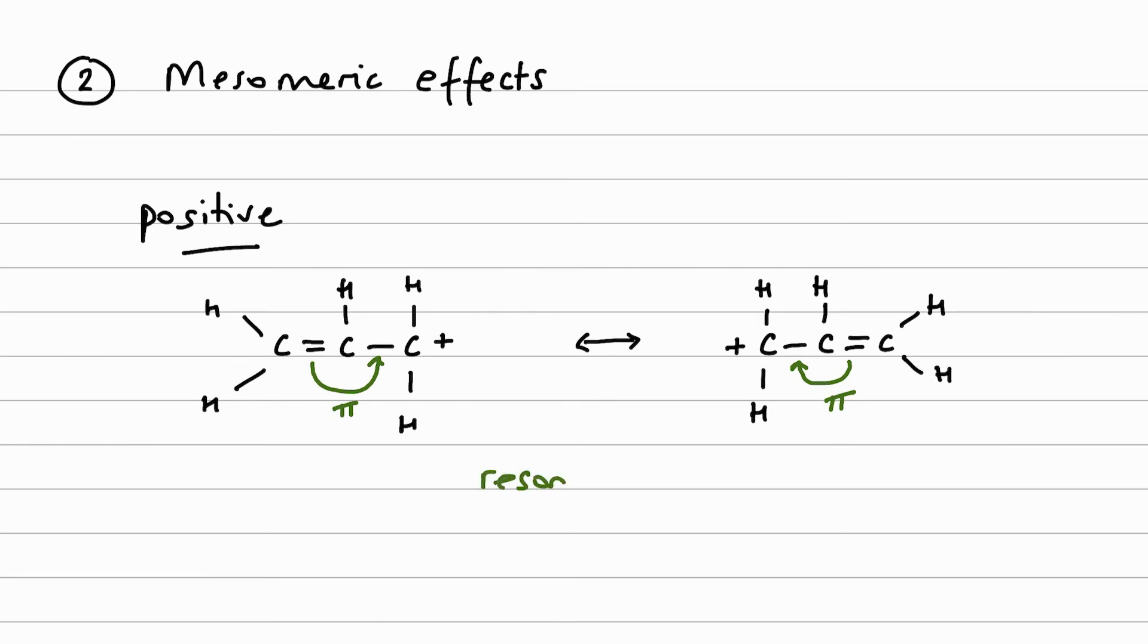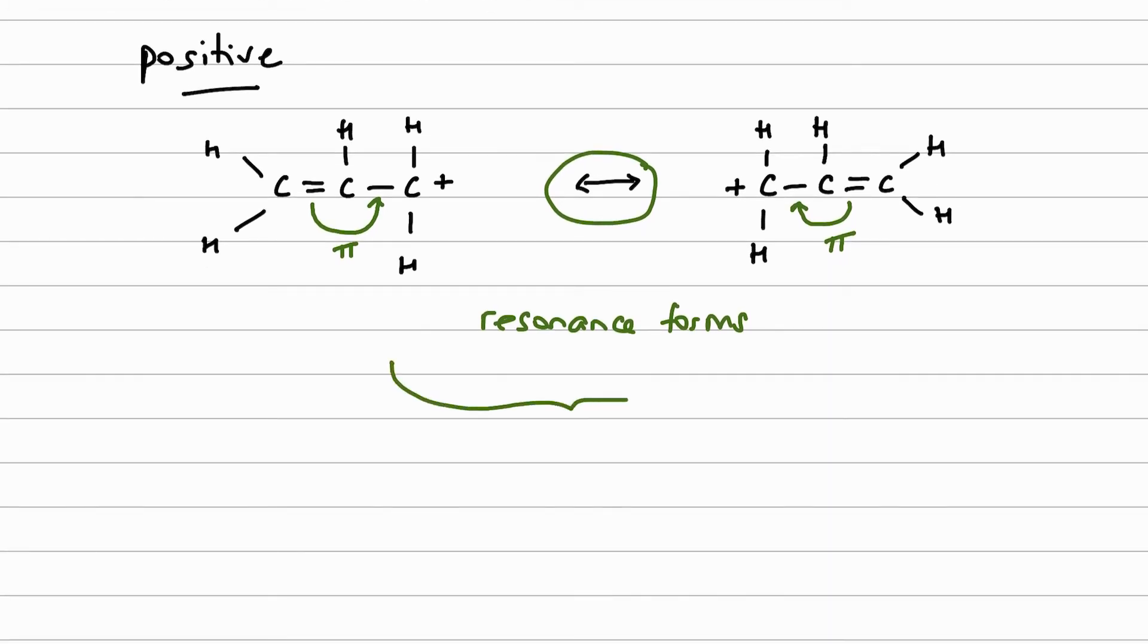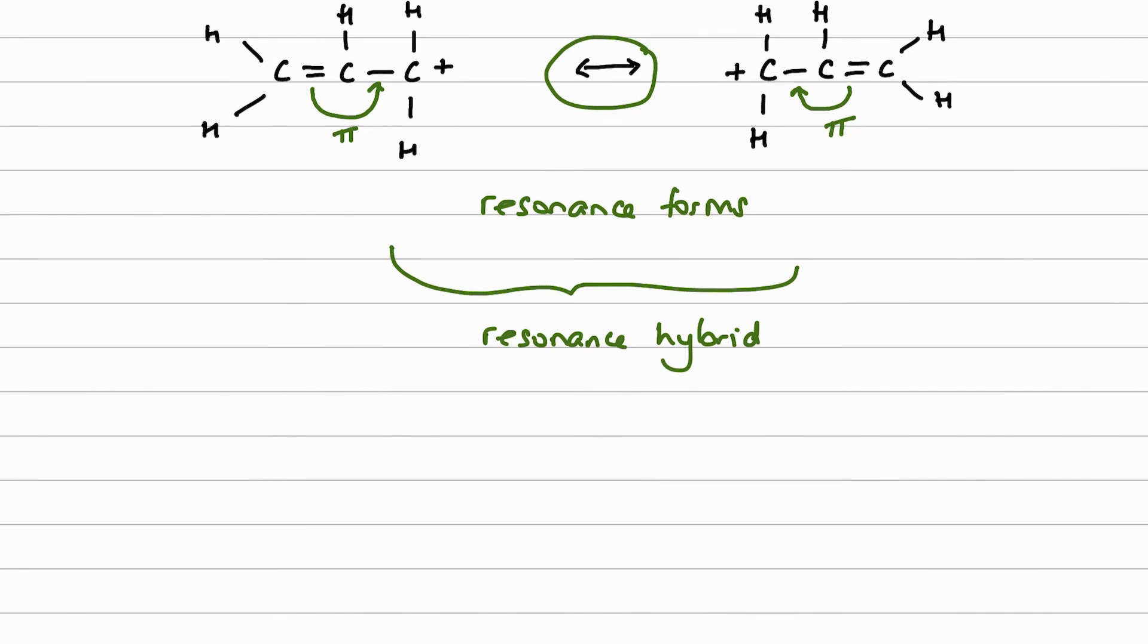Now, as I said, these are known as resonance forms of our carbocation. We need to be really clear here - this double-headed arrow is just showing us the possible resonance forms. We are not saying that the pi electrons are shuttling backwards and forwards so that we have one ion switching into the other backwards and forwards. In reality, the actual structure of our carbocation is somewhere between the two, and that somewhere between the two is known as a resonance hybrid.